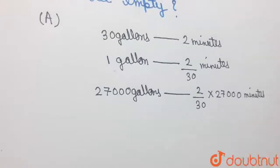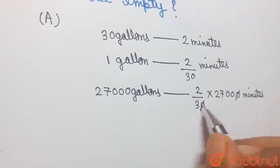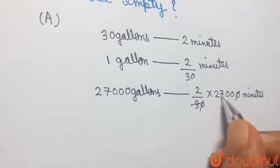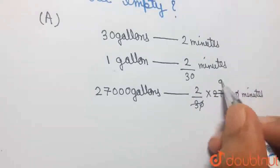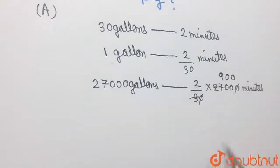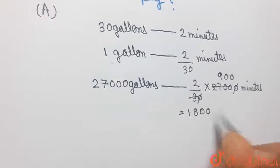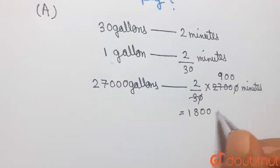Now, simplifying this number, first of all, the zeros cancel off and 2700 by 3 can be written as 900 in the numerator. And 2 into 900 is obviously 1800. So, the time has come out to be 1800 minutes.